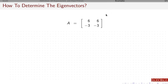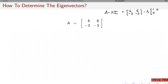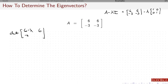Let's take a look at this one. I'm going to take A minus lambda I, and I want to know for what lambdas is going to make this a singular matrix. This is going to be 6 minus 3, 6 minus 3, this is 2 by 2. I want the determinant of — I've got 6 minus lambda times 1, 6 minus 0, minus 3 minus 0, and this is going to be minus 3 minus lambda — that determinant has to be 0.